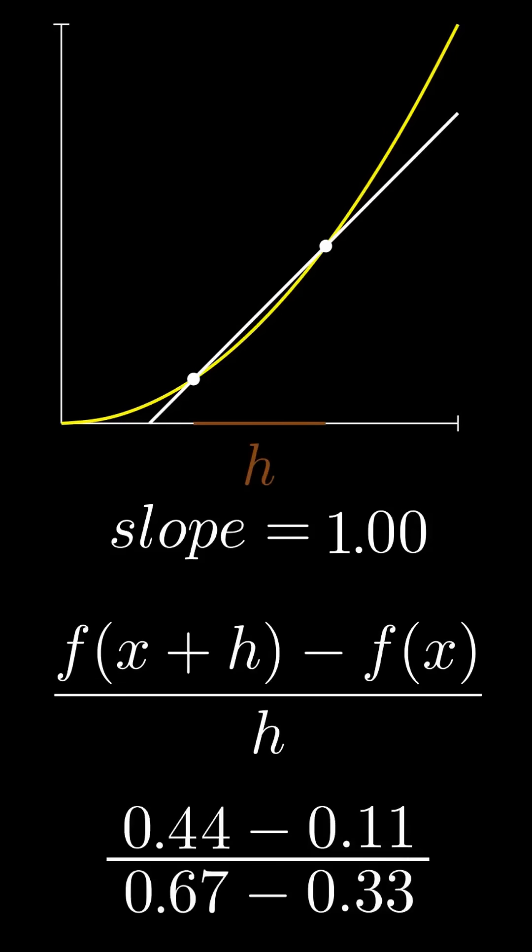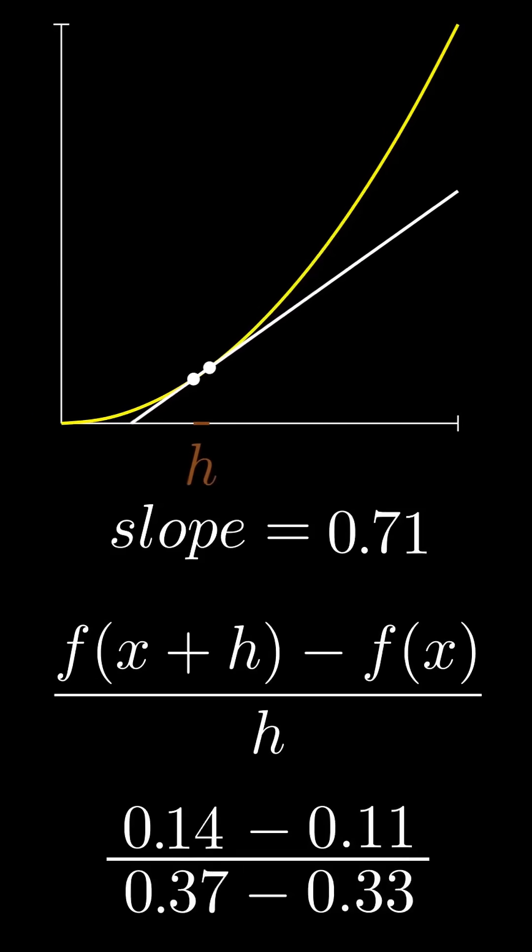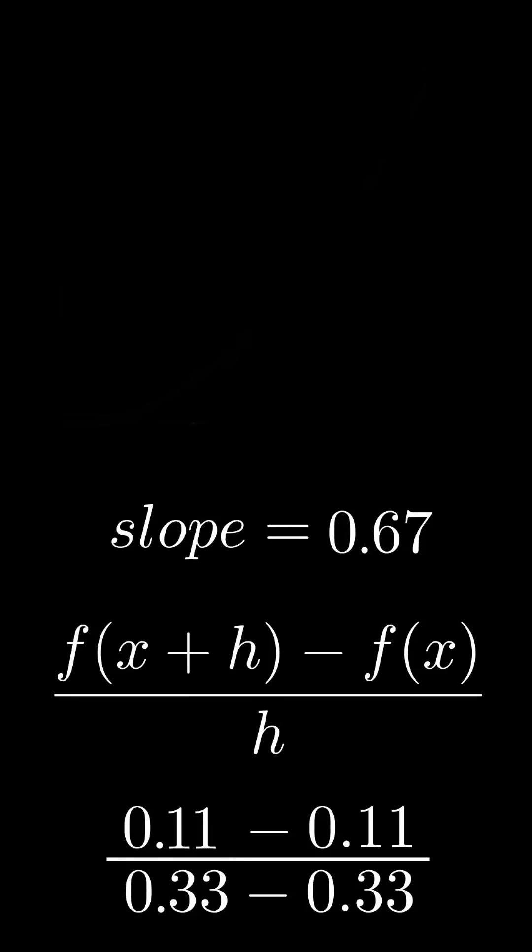Use this formula, where h is the distance between the two points, and make h infinitely small, which you can express with this limit. This is called the difference quotient.